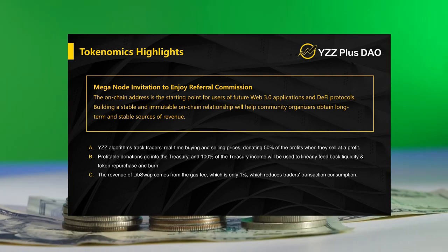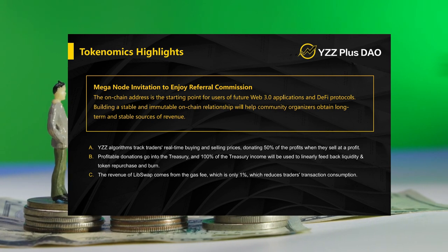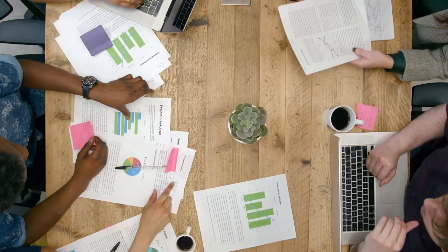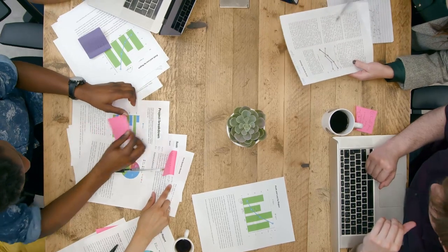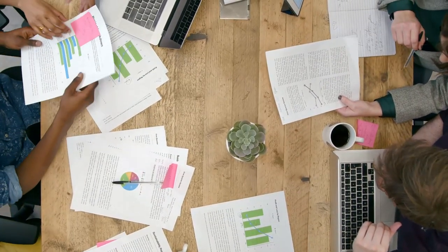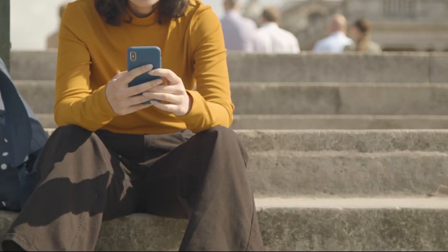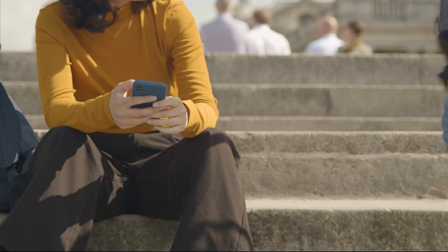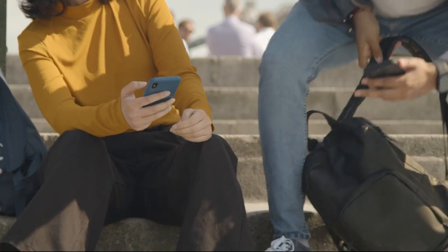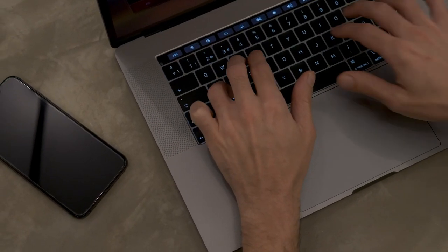At its core, the token builds a specific economic model centered around profit donation. Fifty percent of the profit donation goes into the Vault. The goal of the Vault is final redemption and burning, which restores the market balance of liquidity and creates safer and more efficient DeFi products. This approach keeps the token competitive in the market and attracts new holders.